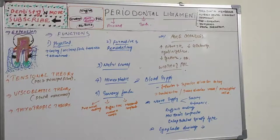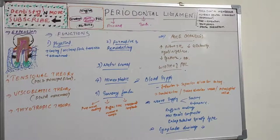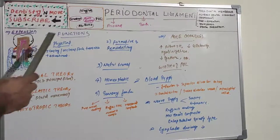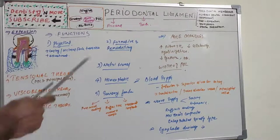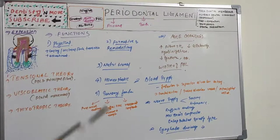We are now in the last segment on periodontal ligament. This session covers functions of the periodontal ligament. There are five types: physical functions, formative and remodeling function, nutritional function, homeostatic function, and sensory functions.